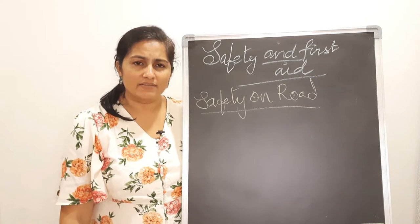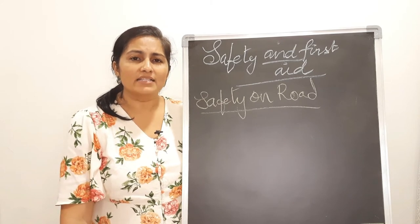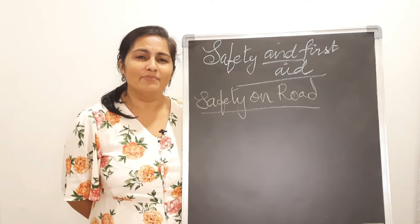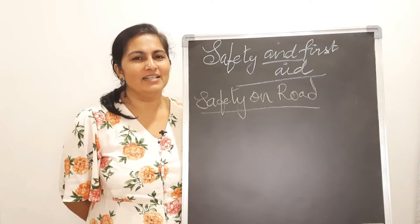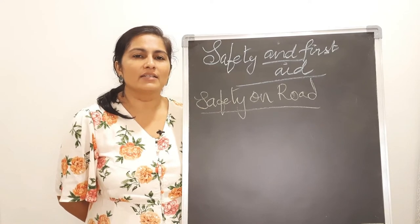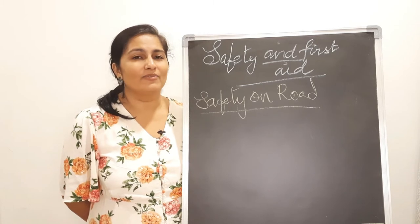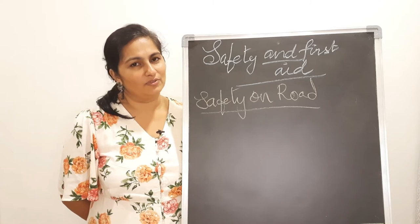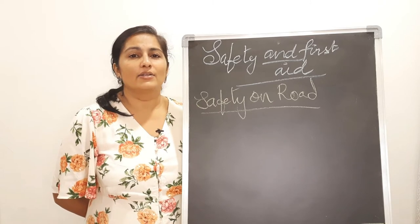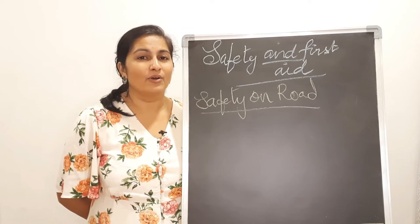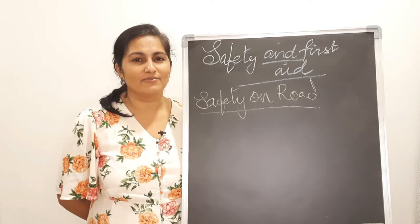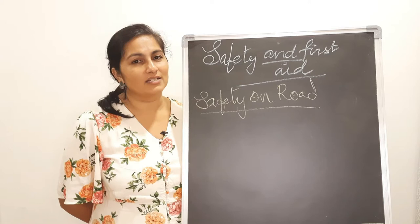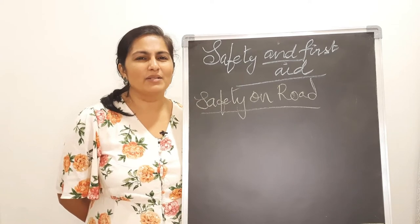There are a lot of accidents that happen on the road, but they can be avoided with a few safety rules. The rules we've been learning include: do not play on the roads; walk on the footpath; cross only on the zebra lines; look to the right and to the left before crossing; do not jump out of a moving bus; and do not disturb a driver while he is driving.